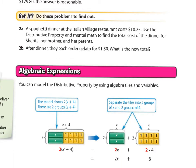Here are the two 'Got It' questions. 2A: A spaghetti dinner at the Italian Village restaurant costs $10.25. Use the distributive property and mental math to find the total cost for Sharita, her brother, and her parents — that's four people all eating the same meal. 2B: After dinner, they each order gelato for $1.50. What is the new total? Remember to find this product times four and add it to the total of the meal. Go ahead, pause the video and try it now.